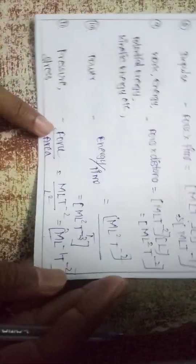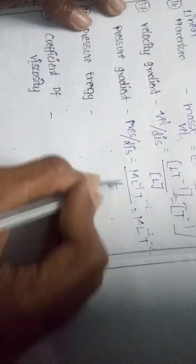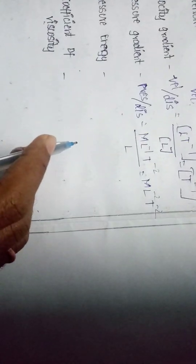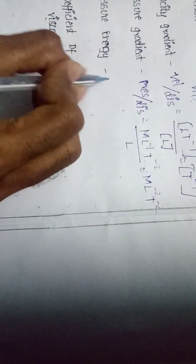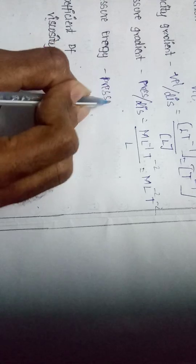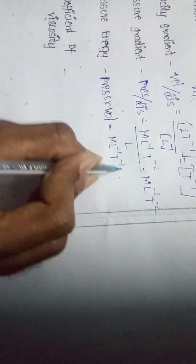Pressure gradient is pressure by distance. Pressure is M L⁻¹ T⁻², divided by L, giving M L⁻² T⁻². Pressure into volume: pressure is M L⁻¹ T⁻² multiplied by volume L³.